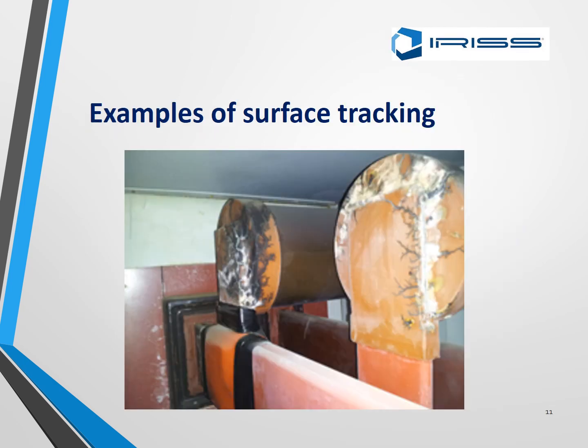Here are examples of surface tracking. As you can see on these busbar joints, not only is there white powder but there is also tracking. It looks like a tree or leaves — that is the carbon — and that is the partial discharge now starting to eat away at the metal.